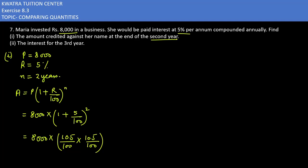What you can do is cancel two zeros with zeros, and one zero with zero. So you have eight into 105 into 105 over 100. You can also cancel 10, so this will be 21 and 2. Eight can also be cancelled to give four. So what you are getting is four into 21 into 105, and the value you get is eight thousand eight hundred and twenty rupees. This is the amount for the first part.